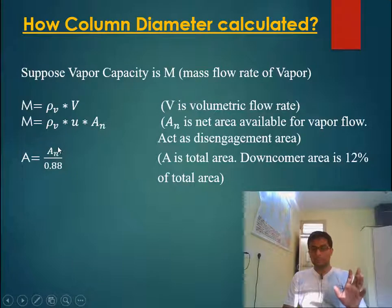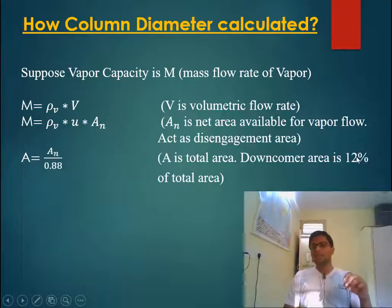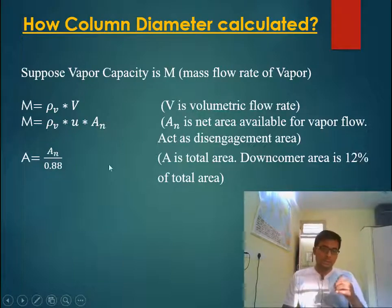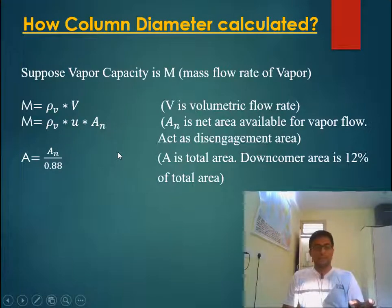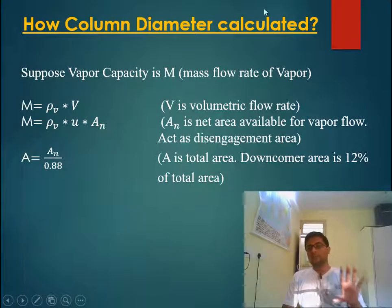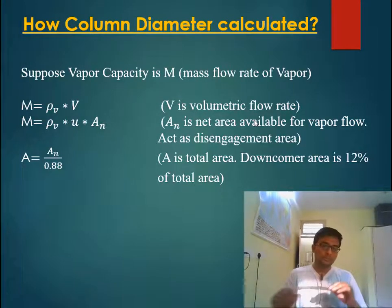The actual column area will be larger than the net area. For example, if the downcomer area is 12% of total area, then actual area equals net area divided by 0.88. Based on this actual area, we can calculate the column diameter.